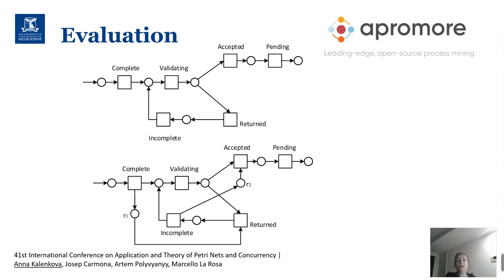We also applied our technique to real-life event logs. Here is a fragment of a model discovered from a real-life event log containing only traces where an application was not accepted. What we discovered is that if an application wasn't accepted, then the loop is performed only once — so if it wasn't accepted once, on the next step it will be accepted. Using our technique, we discovered two additional places, R1 and R2, that define these constraints.